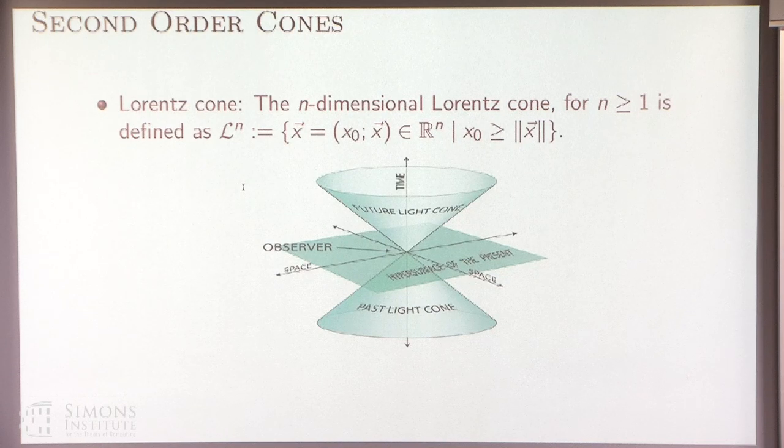So the second order cones are also known as Lorentz cones. And let's begin with the definition of the Lorentz cone. So the n-dimensional Lorentz cone is defined as a set of vectors in R^n where the size of the first coordinate, x_0, is bigger than the norm of all the other coordinates. So here's a picture from Wikipedia which shows the Lorentz cone for three dimensions.